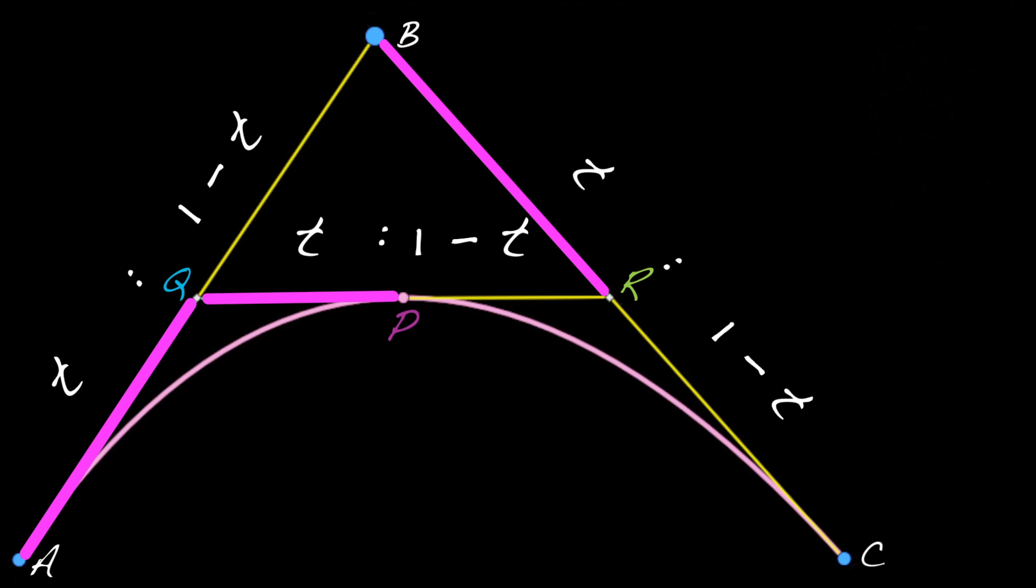And the algebra that goes along with this geometry is that Q can be written as 1 minus t times A plus t times B, because it's on the line segment AB. The point R is on the line segment BC, a fraction t along the way. So it can be written as 1 minus t times B plus t times C. And if P is a fraction t along the line segment QR, then it can be written again as 1 minus t times Q plus t times R.